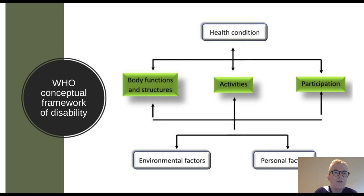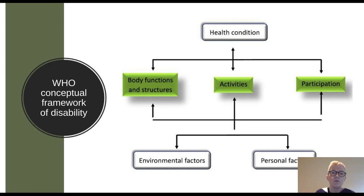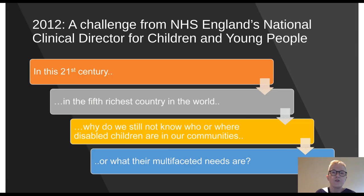Using SNOMED CT, we're able to describe those environmental factors that might otherwise be disabling — not just how wide doors are or whether there's a ramp, but also attitudes amongst other people and in policies and practices. There are then personal factors which come to bear, which might make a child or young person resilient or, on the other hand, more vulnerable to disabling factors. All of these interplay together to decide how disabled a person is at any point along their journey, which can be different. This really lends itself well to SNOMED CT.